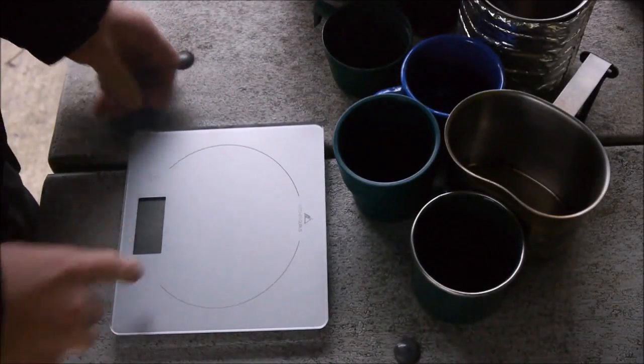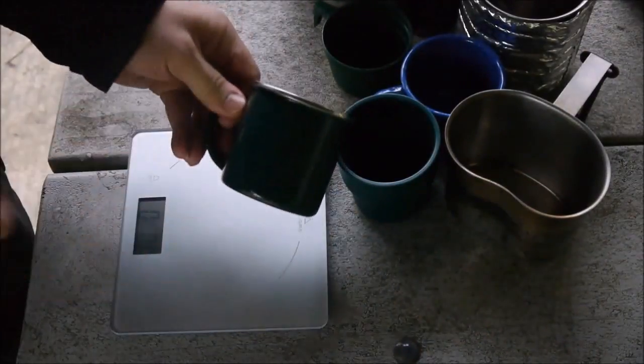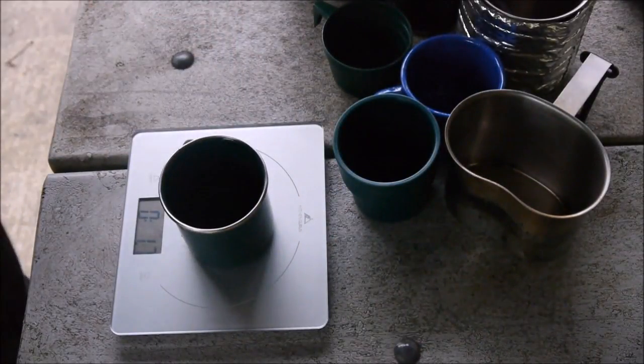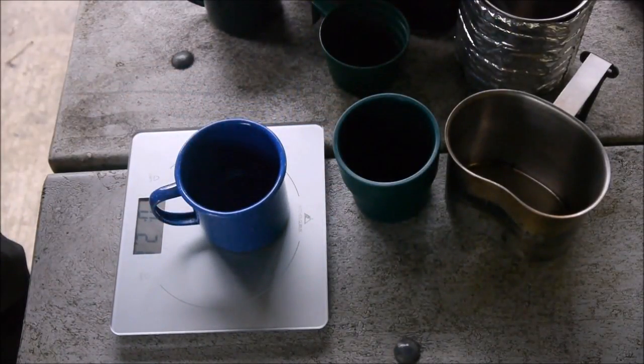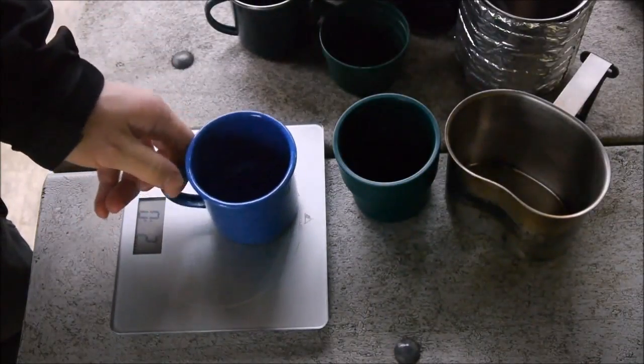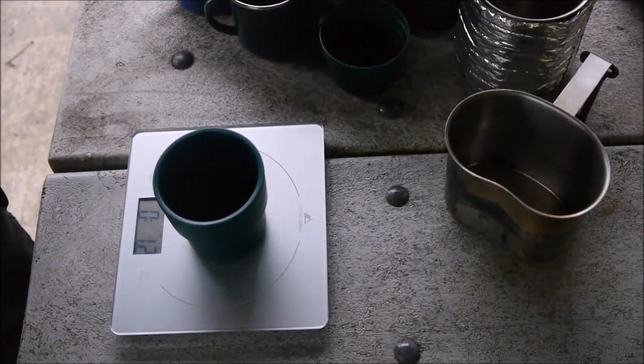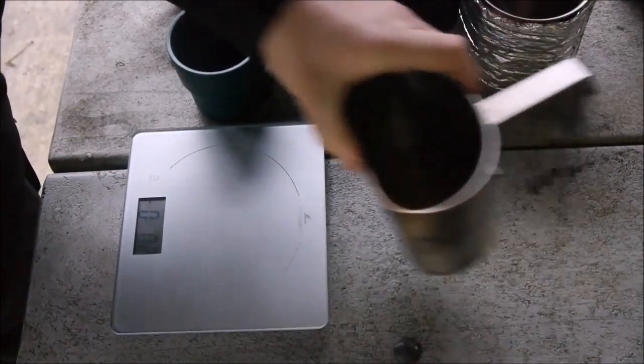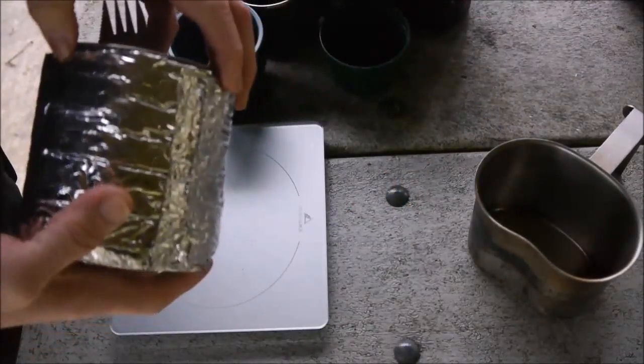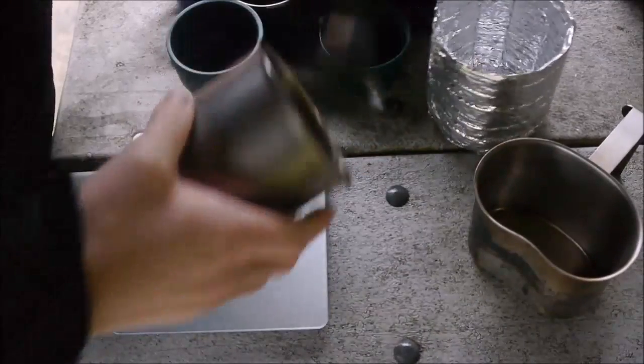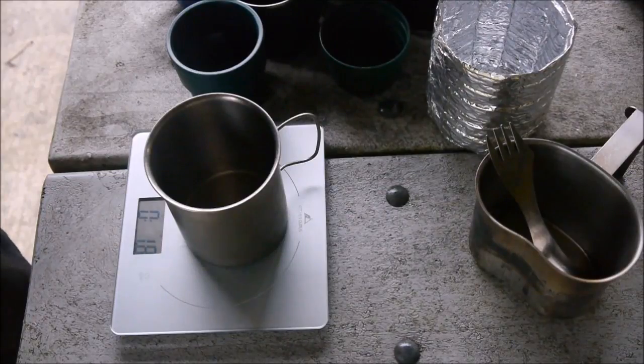And just because I have it with me today I'll throw some weights at you. The green cup is 1.7 ounces. The blue is not surprising it's 2.1 ounces so it's actually a little bit heavier than the green. The green cup 1.2 ounces. The canteen 4.6 ounces.